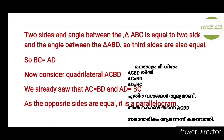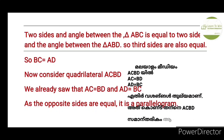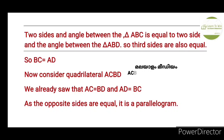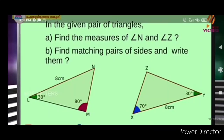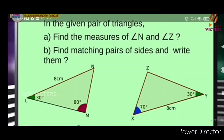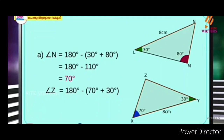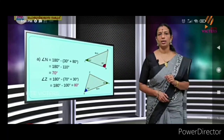We have a quadrilateral ACBD. The opposite sides are equal to the pair, so A and D are equal. AD equals 180 degrees, and A and D equal 180 degrees.